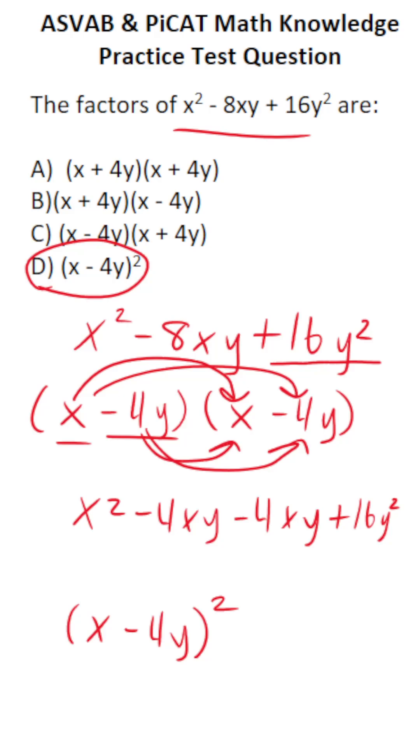Let's reduce this. This is x squared minus 8xy. I simply add negative 4xy and negative 4xy together, plus 16y squared. Does this match our original equation?